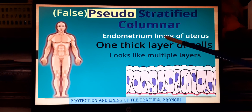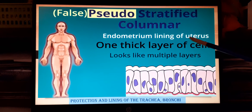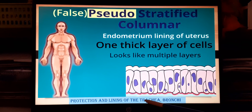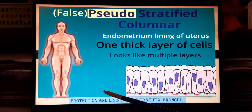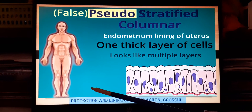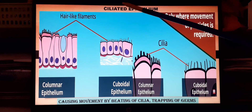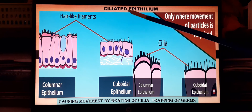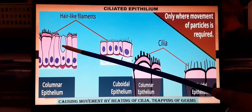Pseudo-stratified columnar epithelium lines the uterus of females — the endometrium lining — and also lines the trachea and bronchi. Wherever present, it protects that organ of the body.